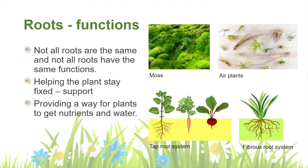I've just given you a hint to the functions of the roots — there are two. The first is to hold and support the plant. Roots keep the plant in the ground and give it support; even air plants that grow hanging onto trees have roots that hold them in place. The second job of the roots is to play a part in the system that gets nutrients and water to all parts of the plant. There are two main types of roots: tap roots and fibrous roots.